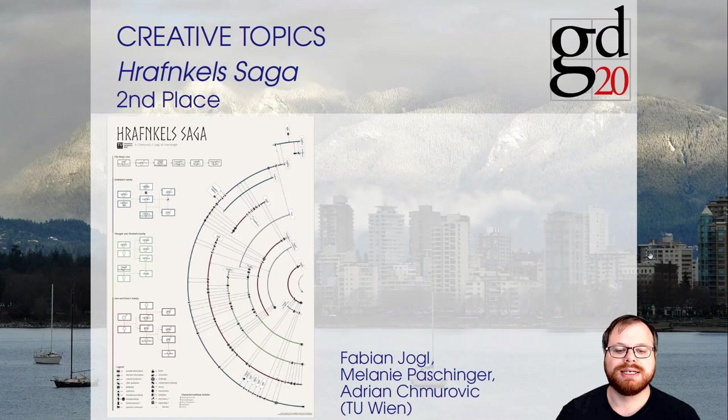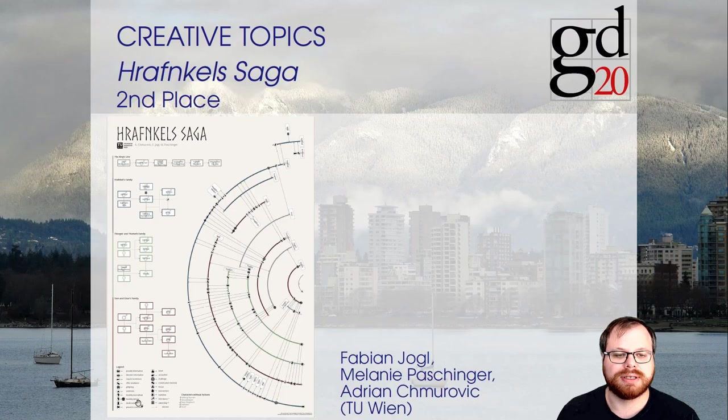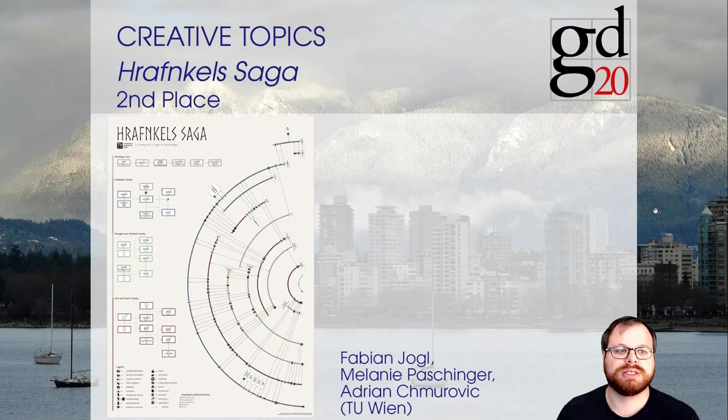In second place, we have a submission by Fabian Jogel, Melanie Paschinger, and Adrian Chmurovic from TU Vienna. This is a circular layout where every character is one of concentric circular arcs, and interactions are a straight line between the arcs. For each interaction there is also a special symbol in the legend where you can read what type of interaction it is. We especially liked that it was very clear to read and you could easily find interactions between actors.